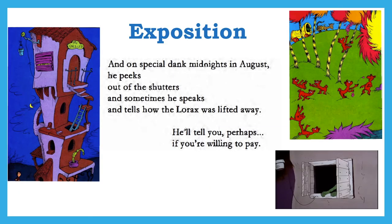Now we're going to take a look at the parts of the plot. Dr. Seuss uses those characters and settings to craft a plot and get his moral messages across about the effects of greed and deforestation. We start with the exposition. Dr. Seuss does something really interesting — he uses a non-linear timeline strategy called in media res, which is Latin for 'into the middle of things,' where a story begins somewhere within the plot rather than using a clear setup-type exposition.